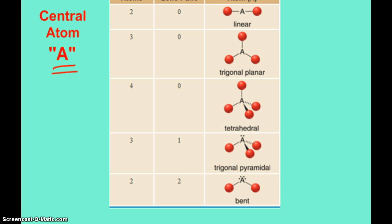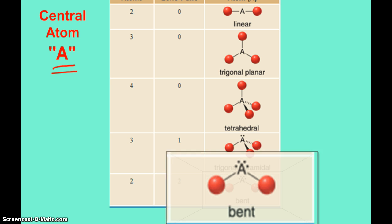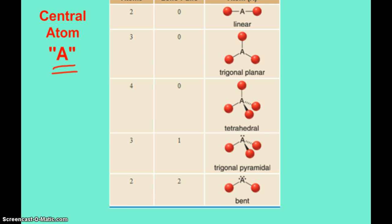And then our last shape we want to be concerned with is if we have two lone pairs and two atoms around our central atom, then it will take on a bent shape. And if you kind of look at the tetrahedral shape, if we remove one of the atoms and replace it with a lone pair, that's the trigonal pyramidal. If we remove two atoms and we have two lone pairs, that's the bent shape. So that's where those are coming from.